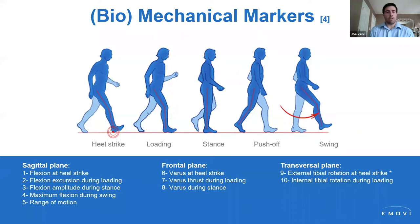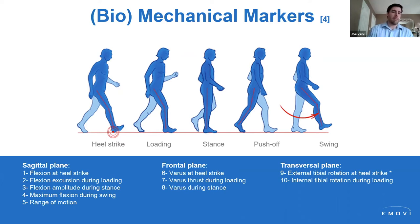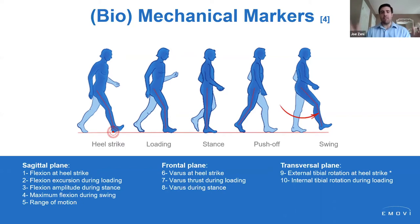In our previous webinars we've talked about biomechanical markers for different conditions. There are numerous biomechanical abnormalities that contribute to knee pain — some more specific to OA, some specific to patellofemoral pain. Not everybody is going to have the same biomechanical markers leading to the same type of knee pain. We need to identify, from this multitude of potential biomechanical abnormalities, which are the most important or most relevant in our individual patients.